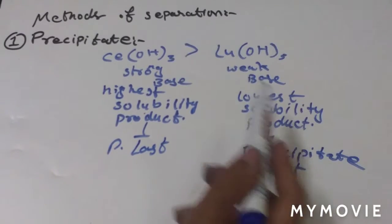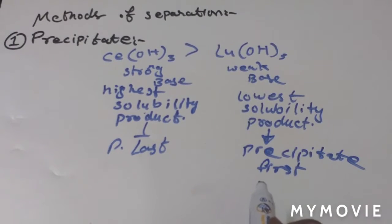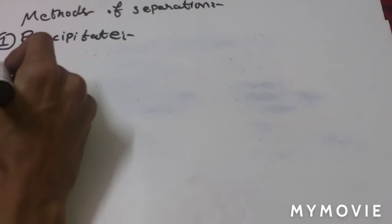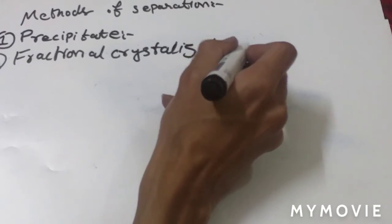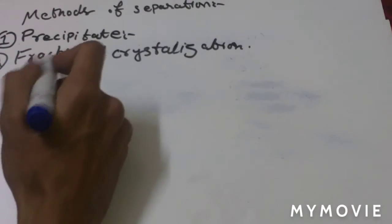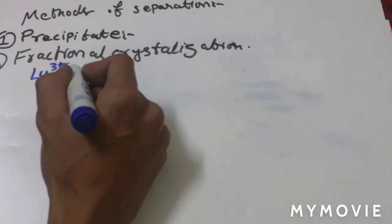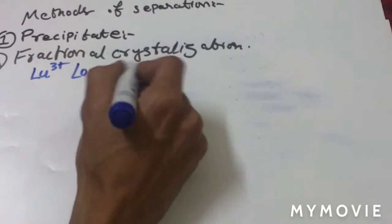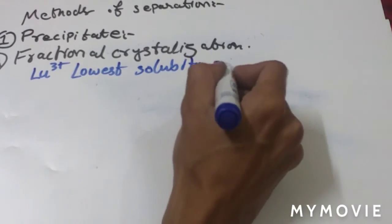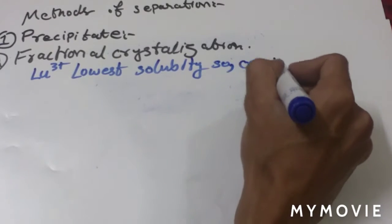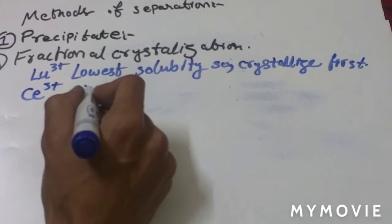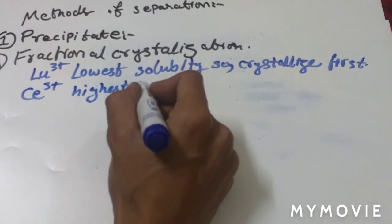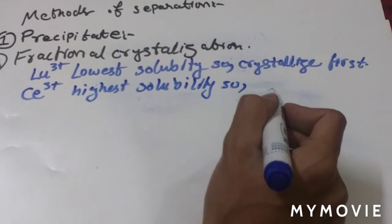The second method is fractional crystallization. Lu³⁺ ions have the lowest solubility, so they crystallize first. Ce³⁺ has the highest solubility, so it crystallizes last.